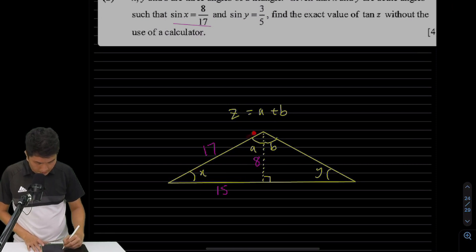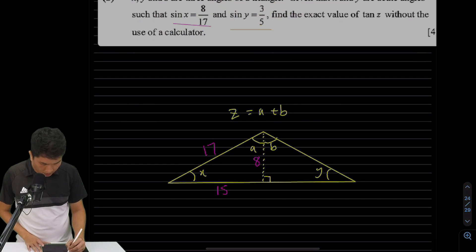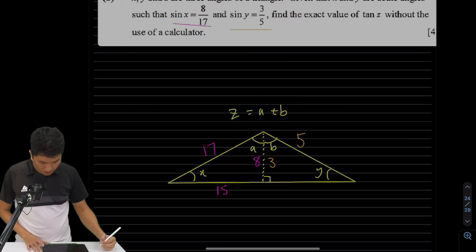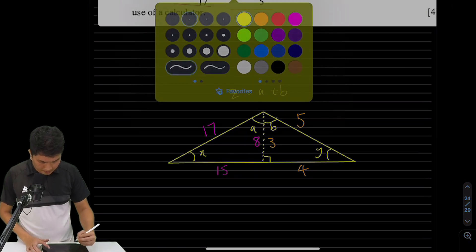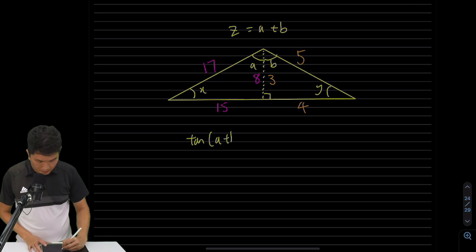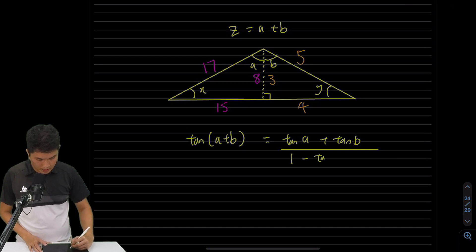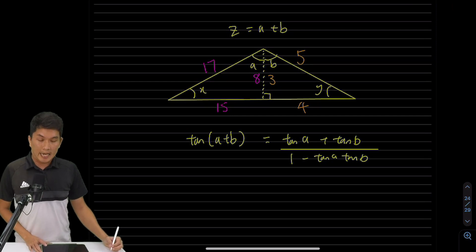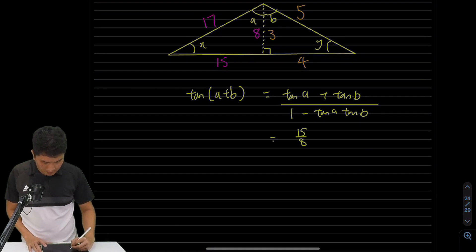For the right triangle, sin(y) = 3/5 gives opposite 3 and hypotenuse 5, so by Pythagoras the adjacent side is 4. Now, tan(z) = tan(a + b), and the addition formula gives: tan(a+b) = (tan a + tan b) / (1 − tan a · tan b). Looking at the angles: tan(a) = 15/8 and tan(b) = 4/3.